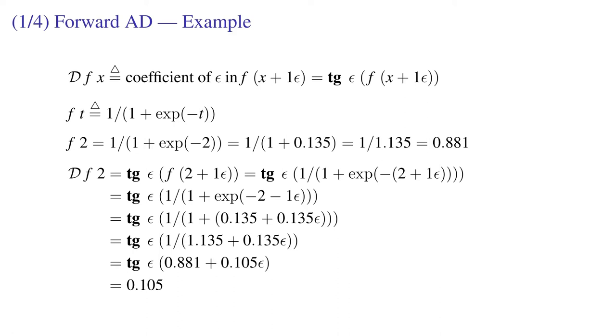We can take f of 2 to get 0.881. We can take the derivative of f at 2. We take f of 2 plus epsilon, crank that through. We get 0.881 plus 0.105 epsilon. We extract the tangent to get the derivative of 0.105.